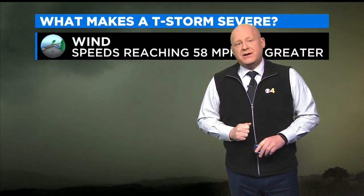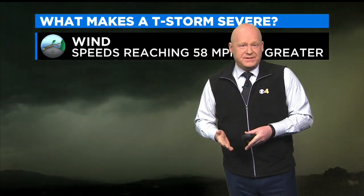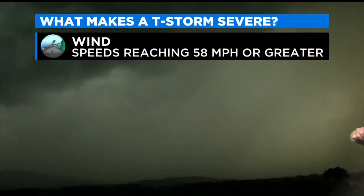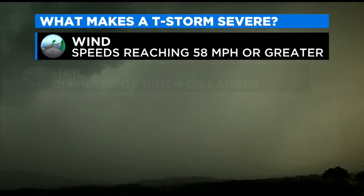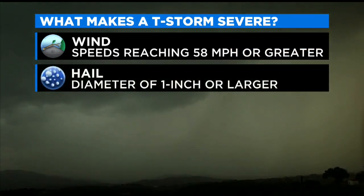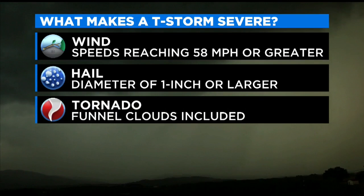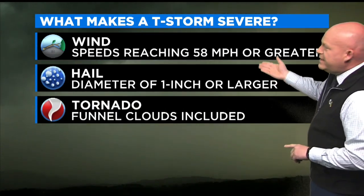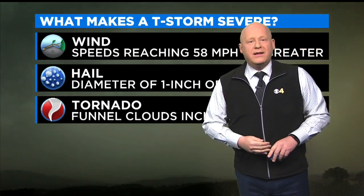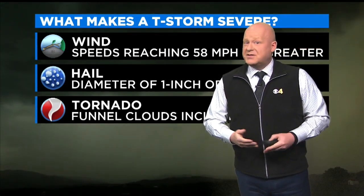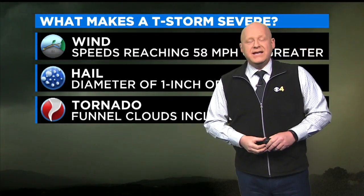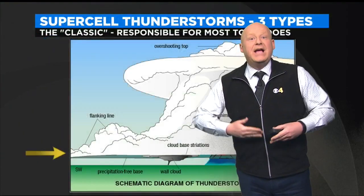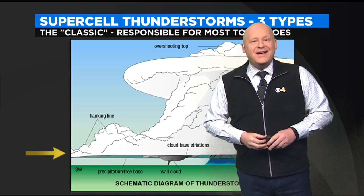So what makes a storm severe, and can an ordinary storm become severe? Absolutely. As long as you're checking one of these three boxes: wind 58 miles per hour or greater, hail one inch or larger in diameter, and the presence of a funnel cloud or a tornado. Any one of these three criteria will classify a storm as severe. So it is entirely possible to get just an ordinary pop-up thunderstorm that lasts long enough and grows strong enough to become severe rated.